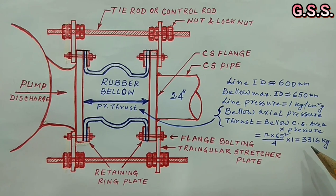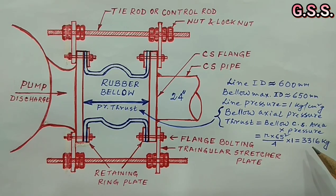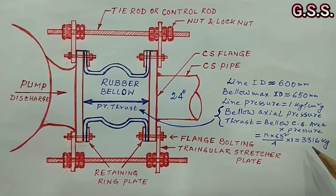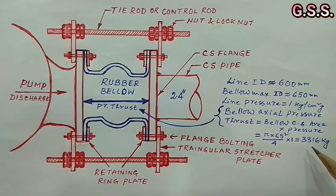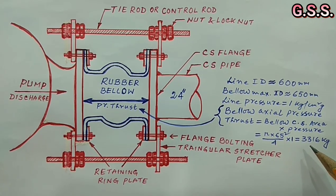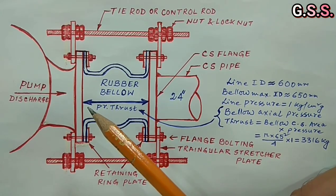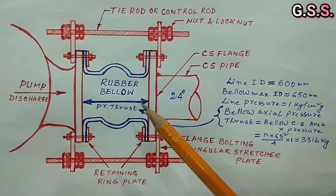If line pressure is 5 bar gauge that means 5 kg per cm square gauge then pressure thrust across the bellow will be 5 times that means it will be more than 15 ton. This axial pressure thrust acts axially along the bellow and due to this axial pressure thrust, bellow will try to expand axially.